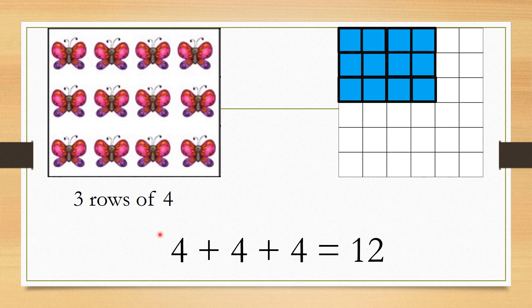Now to find the total, what do I do? I will add the four. How many times? Three times. Why three times? Because I have three rows. So four plus four plus four equals twelve.